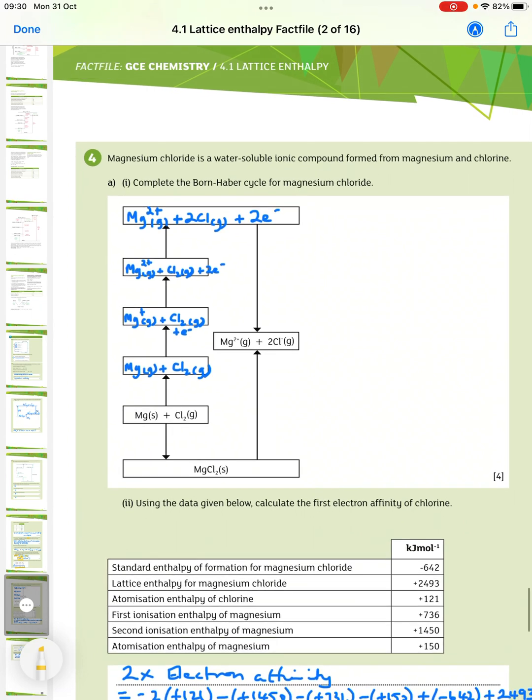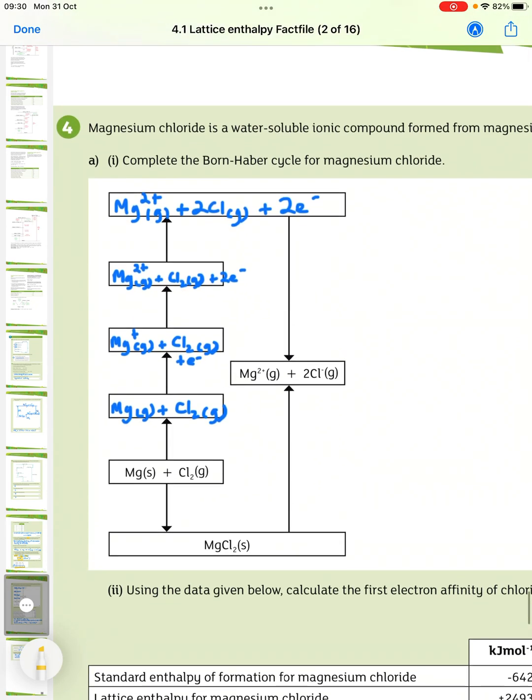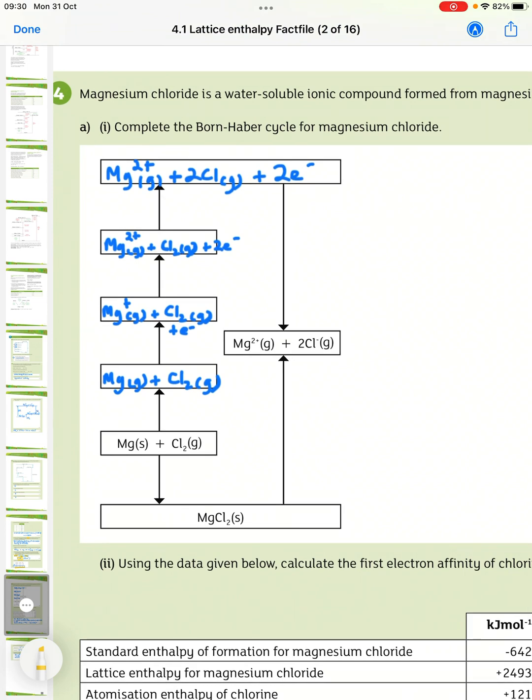Number four. Magnesium chloride is a water-soluble organic compound formed from magnesium and chlorine. Complete the Born-Haber cycle for magnesium chloride. So, just working our way up, we have magnesium here and chlorine gas.